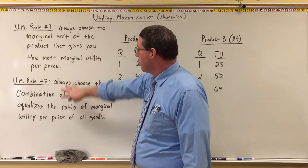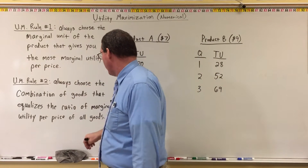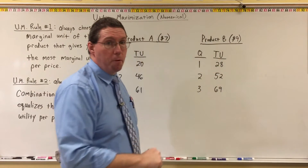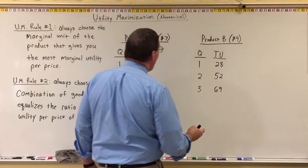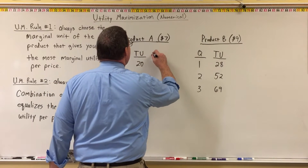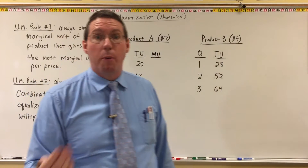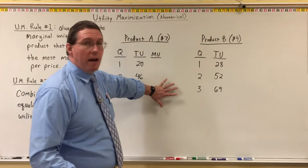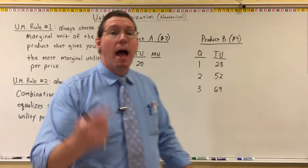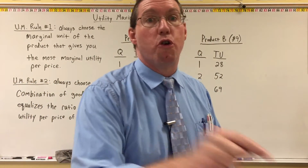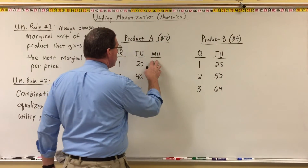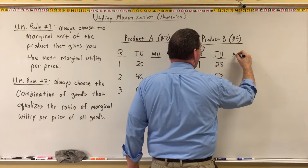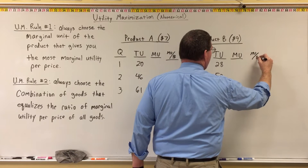In order to implement these two utility maximization rules — both of which refer to marginal utility per price — we need the marginal utility per price for product A and for product B. To get marginal utility per price, I need the marginal utility, so I need to create a marginal utility column. On tests and quizzes, I may not even give you space for these columns — I expect you to know you have to create them yourself. I need a marginal utility column and a marginal utility per price column for both products.